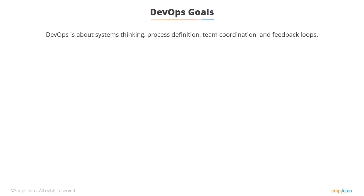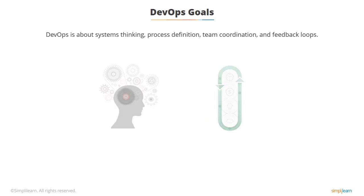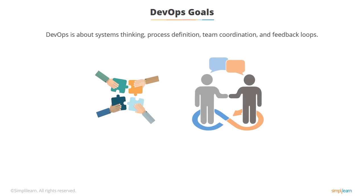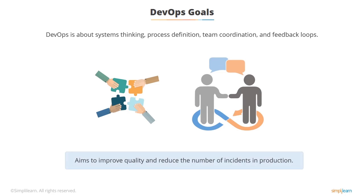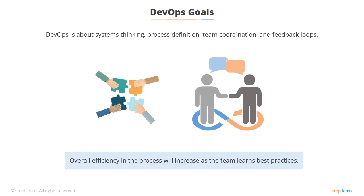What are the goals of DevOps? It's about thinking about the whole system — the whole process from start to end. This involves coordinating with the teams and having feedback loops from one position to another. It's also about continuous improvement: we need to improve the way we work by working well together and using the tools correctly so that we have fewer incidents in production, which have costly repercussions. We also want to improve process efficiency so that the team learns and performs better and better each time.